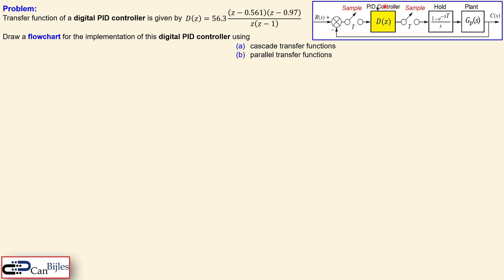The PID controller is placed here with a sampler at the front and back, and we also have the hold operation which is a zero-order hold, and the plant. This is a complete diagram of a digital controller system. Specifically, we now focus only on the PID controller implementation using a flowchart. The question is: draw a flowchart for the implementation using cascade transfer functions and also the parallel transfer function — those are the two questions.